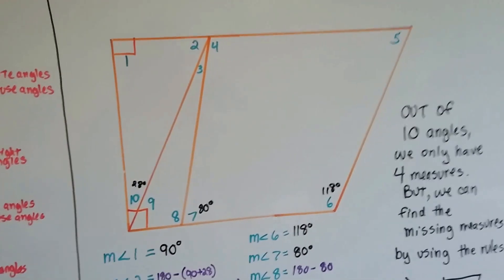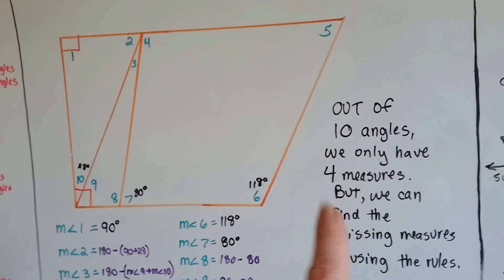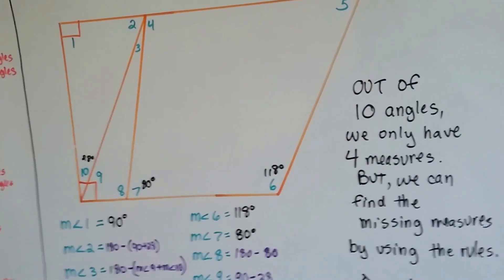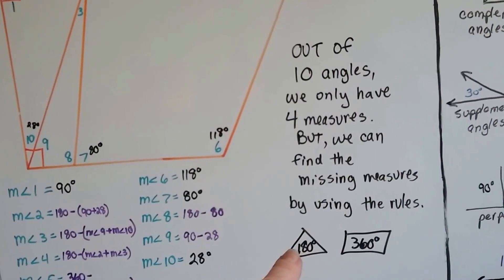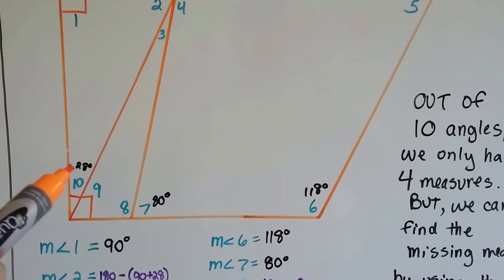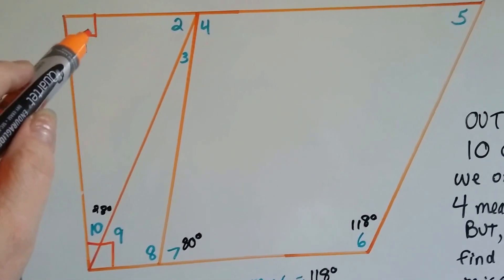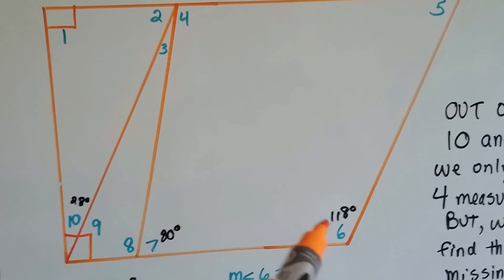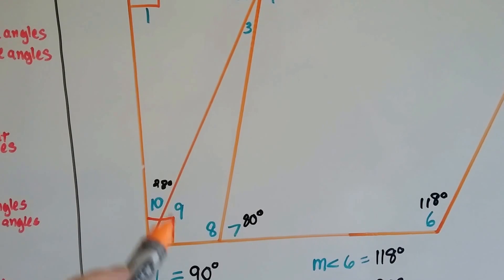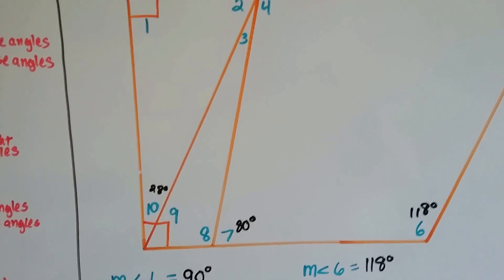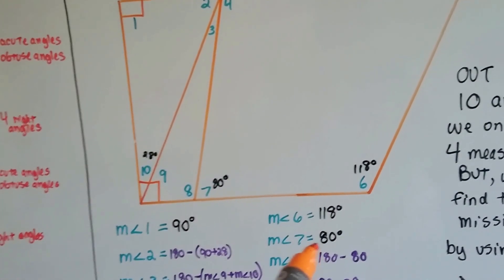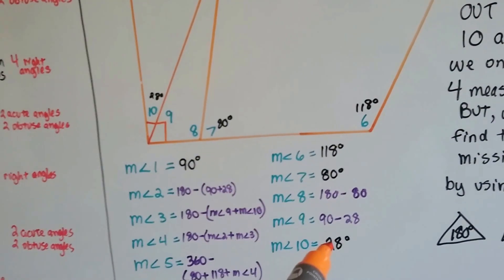So I've got my big orange box here, and out of ten angles, we only have four measures. But we can find all the missing measures that are in here by using our rules of knowing that triangles are 180 degrees inside, and rectangles are 360. So the only four measures we've got are that this is a 90 degree angle because we can see the box. We've got number 6 is 118 degrees, and number 7 is 80 degrees. And even though numbers 9 and 10 is a 90 degree angle, we only have the measure for number 10. Alright? So we know number 1 is 90, we know number 6 is 118, and number 7 is 80. And we also know that number 10 is 28 degrees.